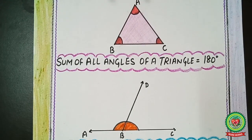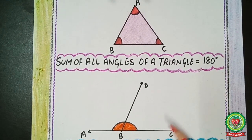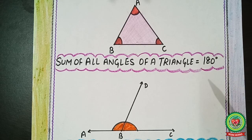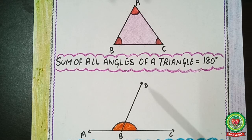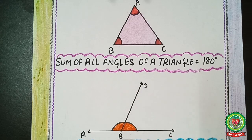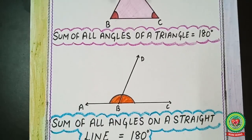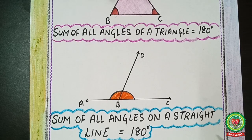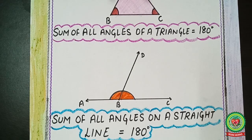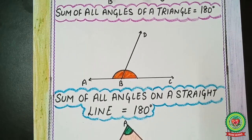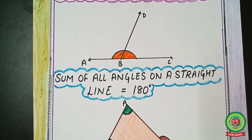Now looking at the second figure, the property that comes to mind is the straight line property. Here, AC is a straight line and BD is a ray making two angles. So we apply: the sum of all angles on a straight line will always add up to 180 degrees.